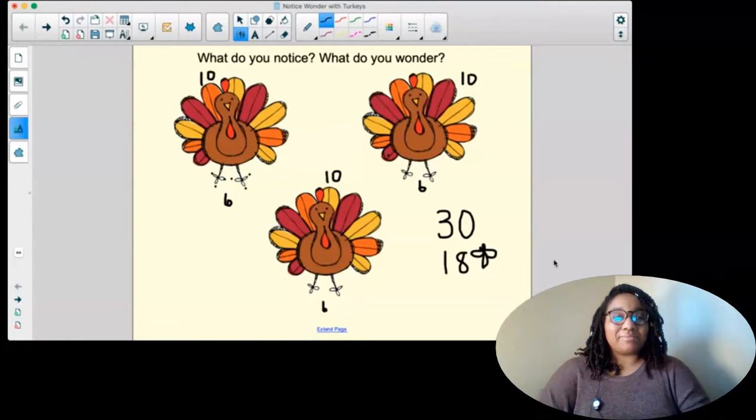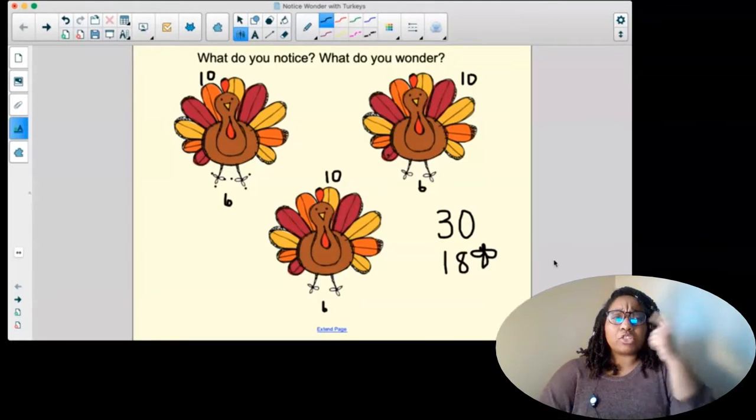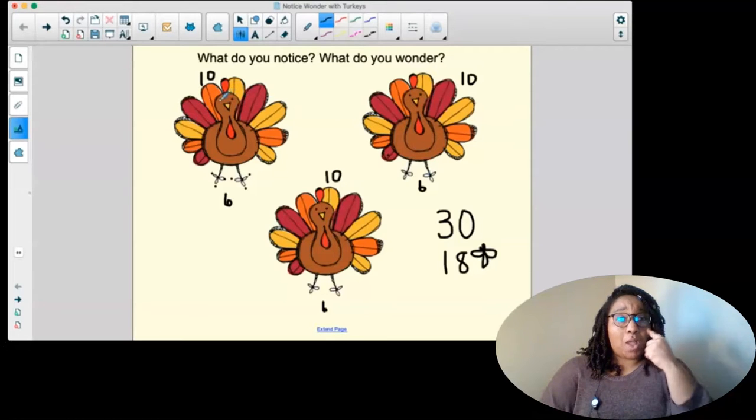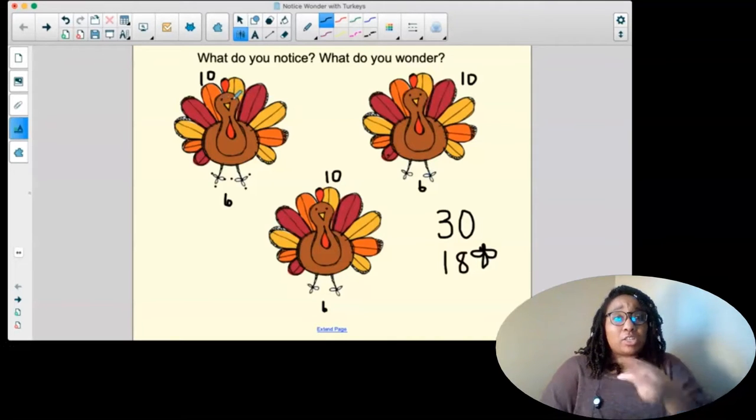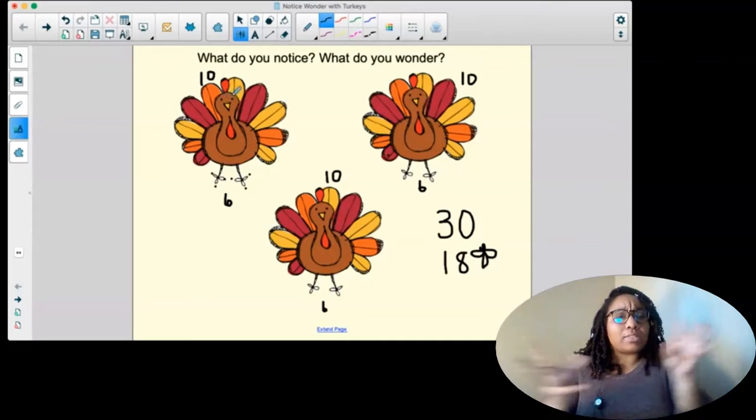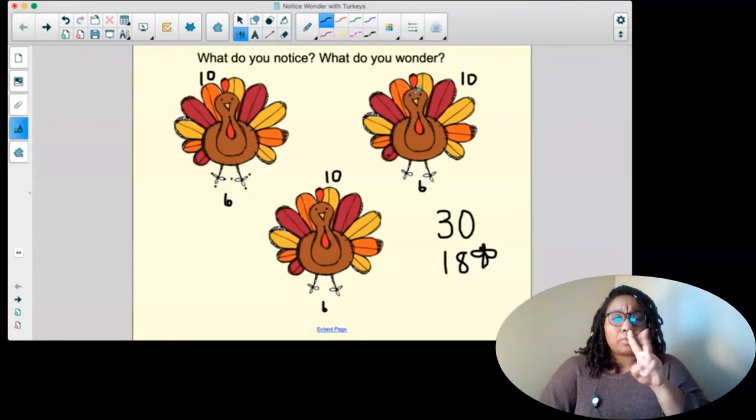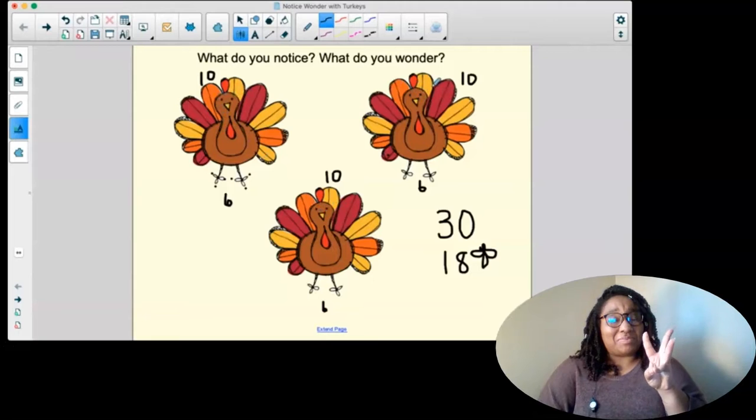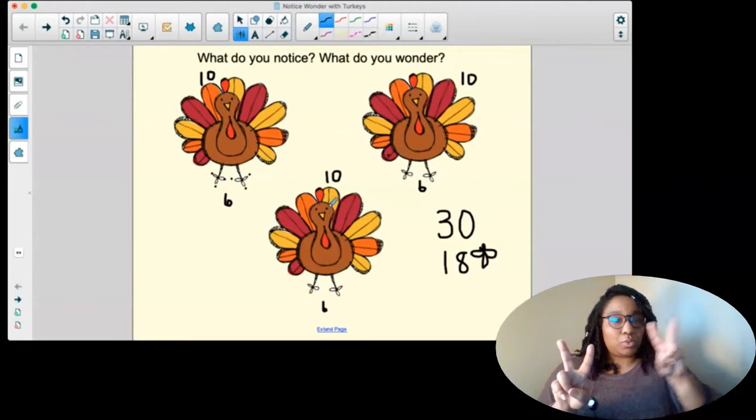Okay, what else did you notice? I bet. Did anyone notice that there's two eyes on each turkey? Let's see. There's one, two. How many turkey eyeballs are there all together? Let's find out. One, two, three, four, five, six. Ah, we had two plus another two plus another two made six.